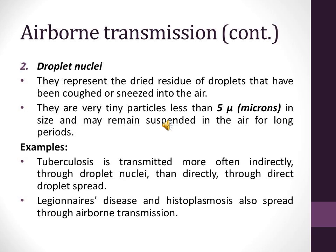The second type is droplet nuclei — the dried residue of droplets that have been sneezed or coughed into the air. Their size is less than five microns and they can remain suspended in the air for long periods. Tuberculosis is transmitted more often indirectly through droplet nuclei than through direct droplet spread. Legionnaires' disease and histoplasmosis also spread through airborne transmission.